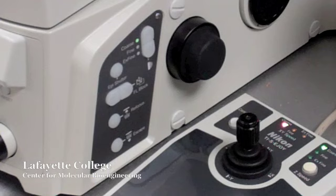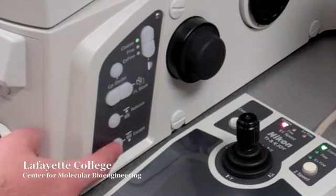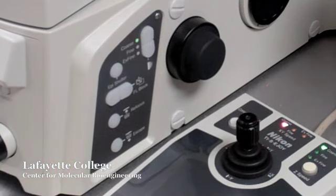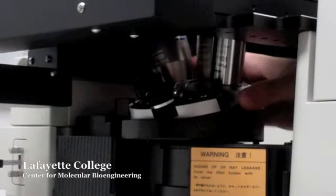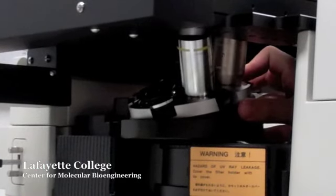To change between 10x, 20x, and 60x objectives, first press ESC to lower the nosepiece. You can manually select your objective by using the rotator beneath the stage.